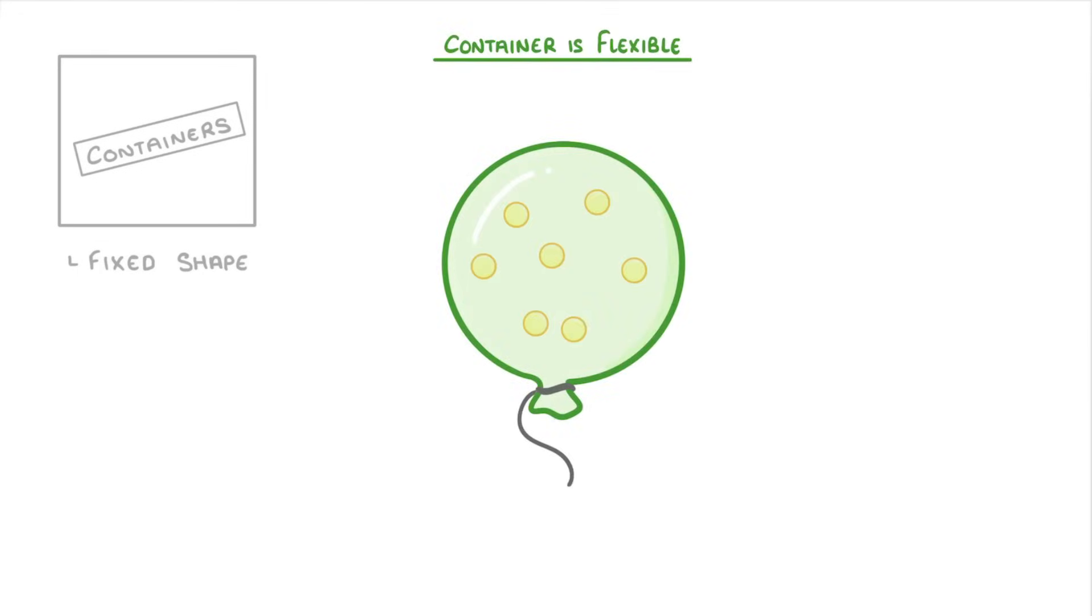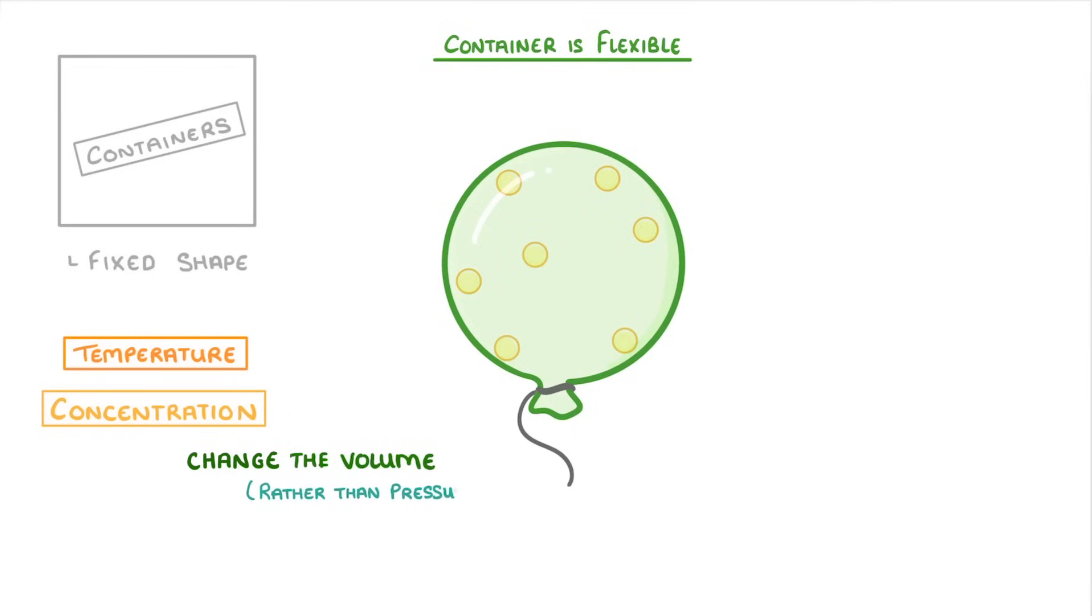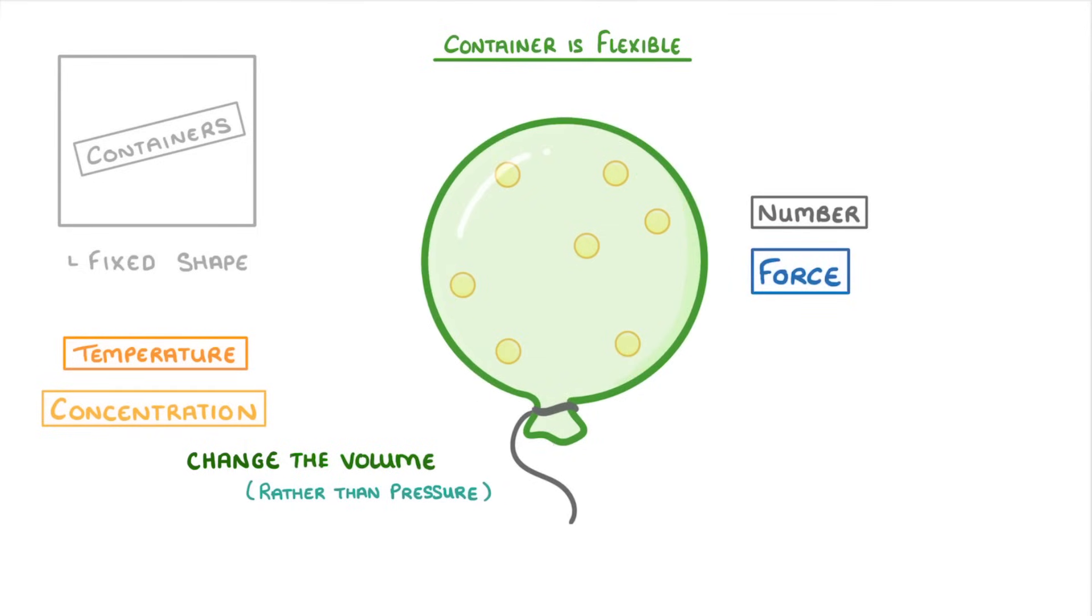The last thing I want to mention is that we've so far been considering our containers as a fixed shape. Sometimes though, like in the case of a balloon, the container is flexible and so it can expand or shrink. In these cases, changes in temperature and concentration will change the volume of the container rather than the pressure. This is because any increase in the number or the force of the collisions would just cause the balloon to expand, rather than increasing its pressure.